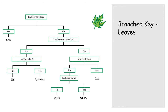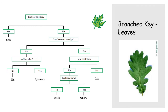A branching key looks something like a family tree, but instead of people it uses different questions. You go left or right depending on your answer. The first question here is 'leaf has prickles' — yes or no. You can also get questions like hair colour or eye colour, giving multiple branches. In this instance: 'leaf has prickles' — the answer is no. We then go to 'leaf has a smooth edge' — the edges are smooth, so yes. Then 'leaf has lobes' — this leaf definitely has lobes — so yes.